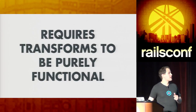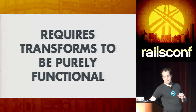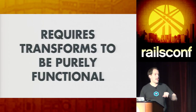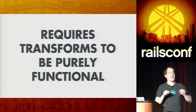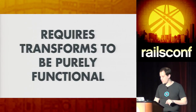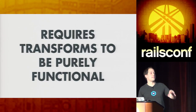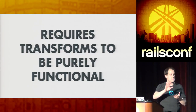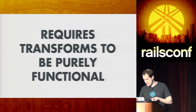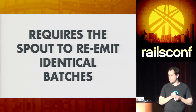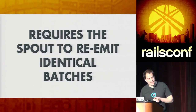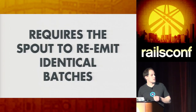If you have a need to get the current time for a batch, one way to do it is to have a spout that only emits the current time. And if the batch gets re-emitted, it saves off the time for that batch ID. It's also going to require spouts to re-emit exactly identical batches, which unfortunately most spouts do not support. Redis does not support this.